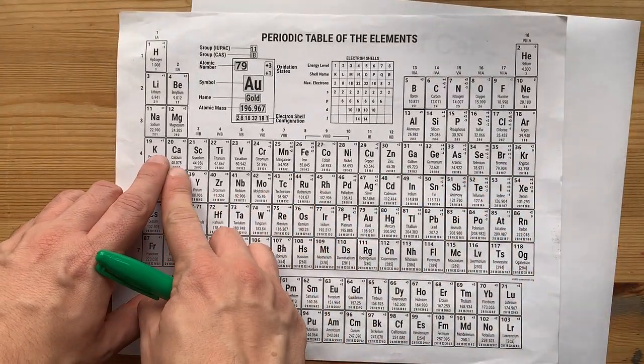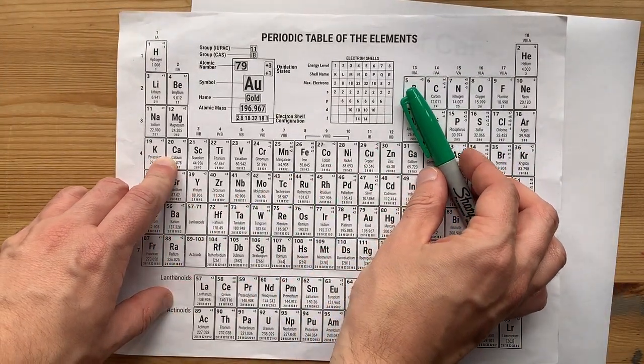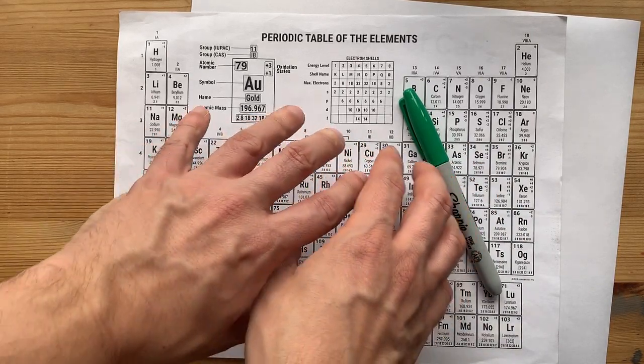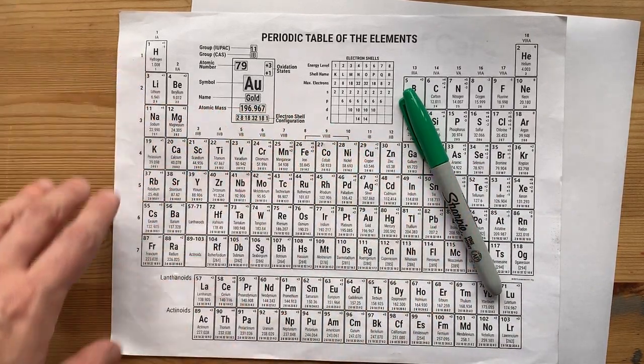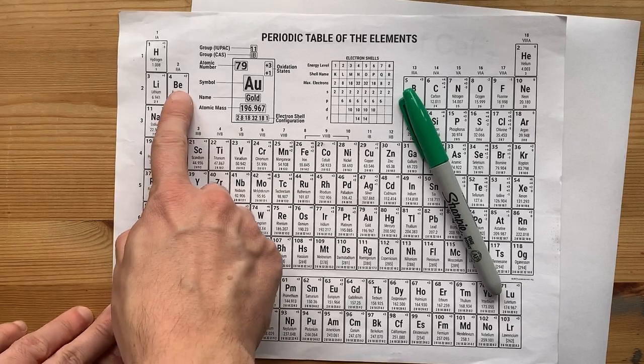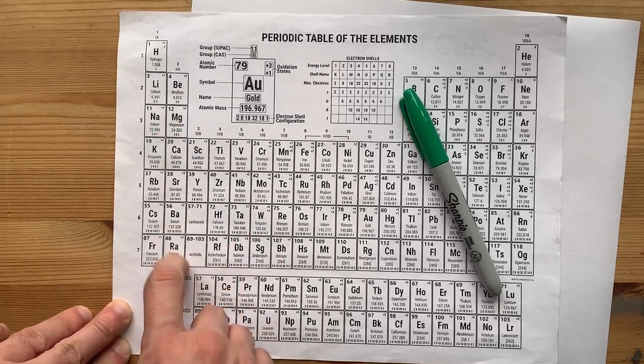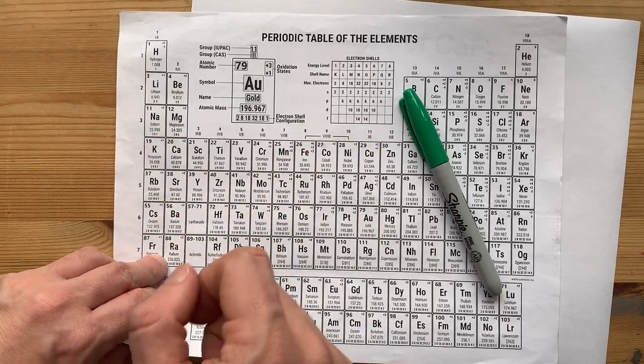Now, calcium is a metal. It comes from the left side of the periodic table. Everything over here is the metal, except for hydrogen. Calcium is firmly in the alkaline earth metal group. It's a metal.